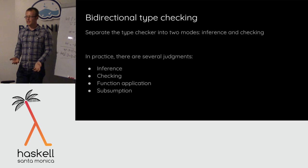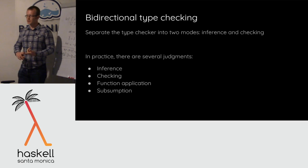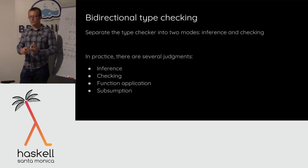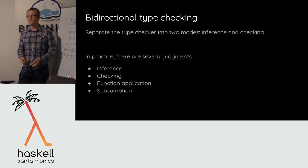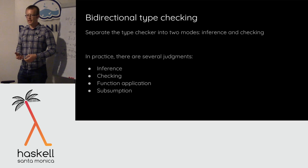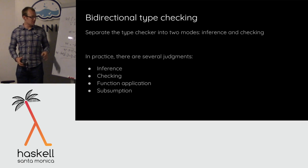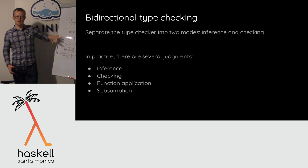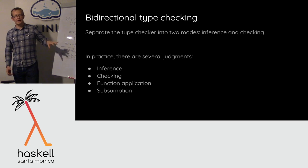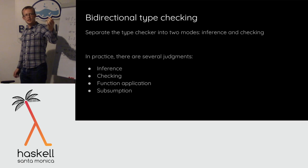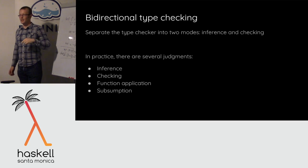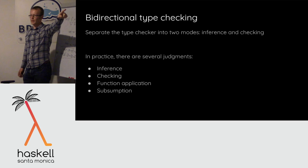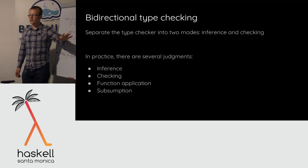There's also skolemization. When checking something against a polymorphic type, you need a fresh type variable that does not unify with other types — called a skolem constant. Part of the cleanup process is checking that skolem constants can't escape. For the ST monad example, you check during the escape check that H didn't leak into the outside context — i.e., you didn't leak any mutable references — or that the implementation didn't leak out into the result type.